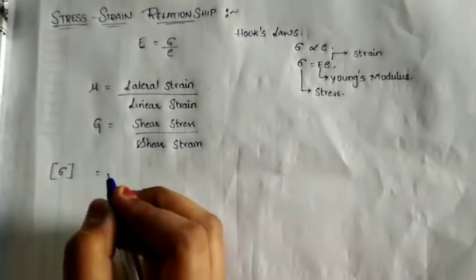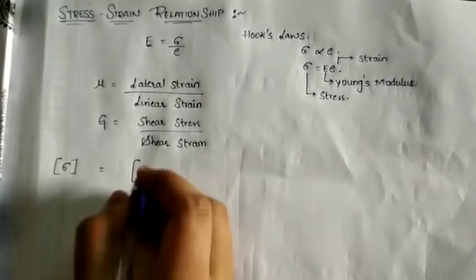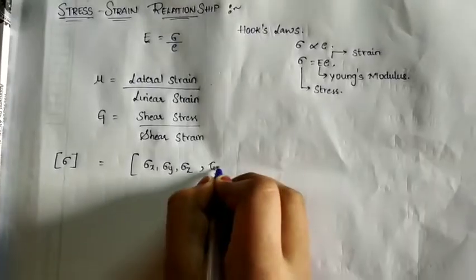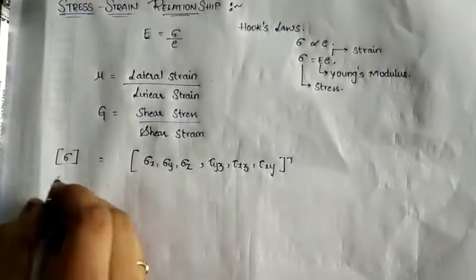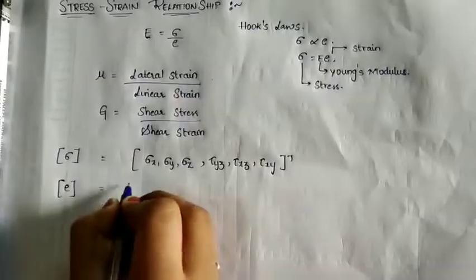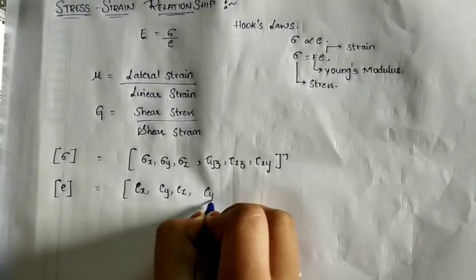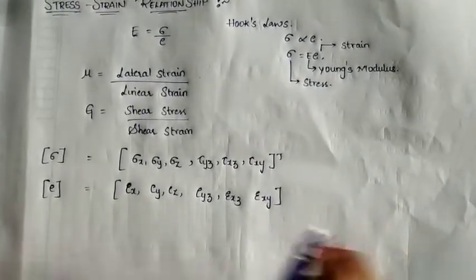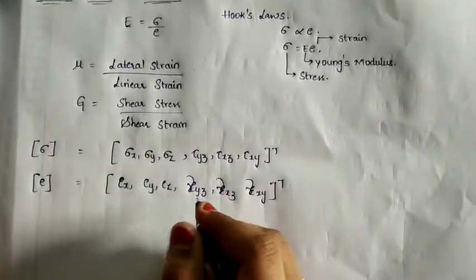Now, on a 3D element we have any types of stresses — there are 6 stresses in total: 3 normal stresses and 3 shear stresses. That is sigma x, sigma y, and sigma z, and tau xy, tau yz, and tau xz. Similarly, we have 6 strains: epsilon x, epsilon y, epsilon z, and the shear strains gamma xy, gamma yz, and gamma xz.